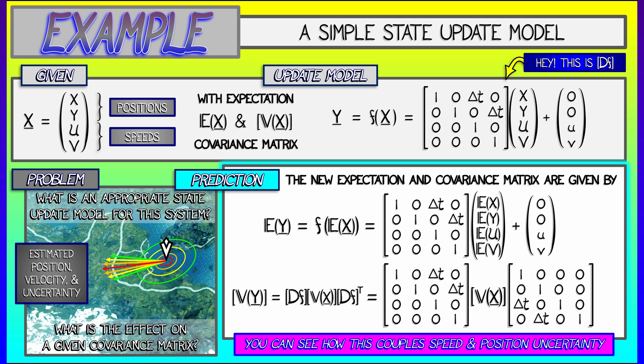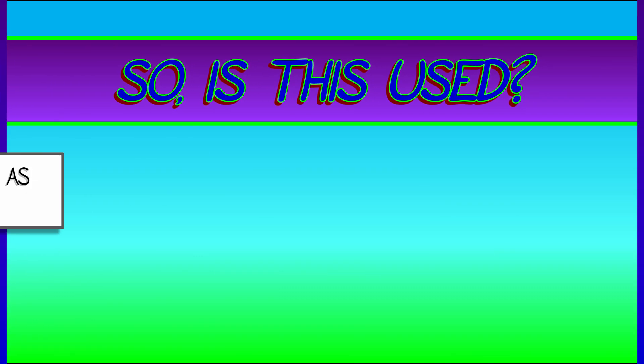So you can see how this update to the covariance matrix mostly keeps things the same. But those off-diagonal terms, those delta t's, wind up implicating uncertainty in the velocity components with uncertainty in the position components. And that's really nice.